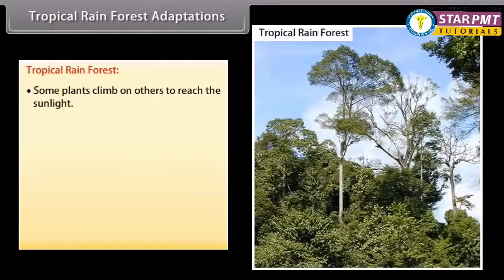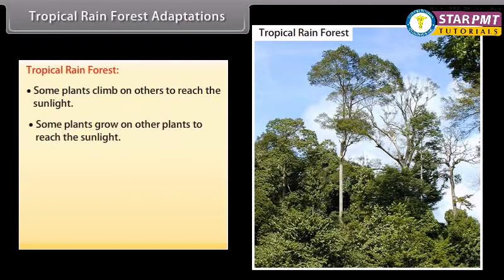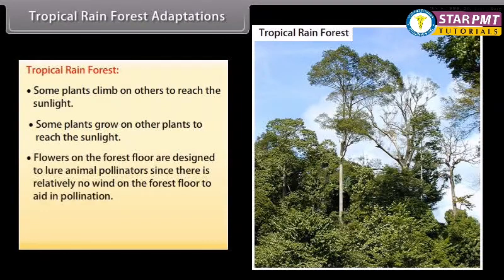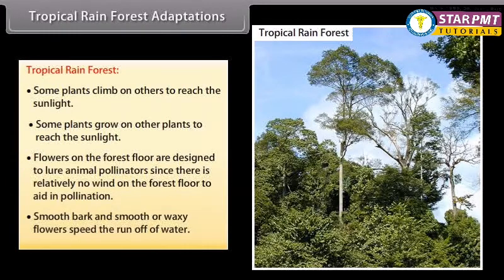Tropical rainforest adaptations: some plants climb on others to reach the sunlight, and some grow on other plants to reach the sunlight. Flowers on the forest floor are designed to lure animal pollinators, since there is relatively no wind on the forest floor to aid in pollination. Smooth bark and smooth or waxy flowers speed the runoff of water.